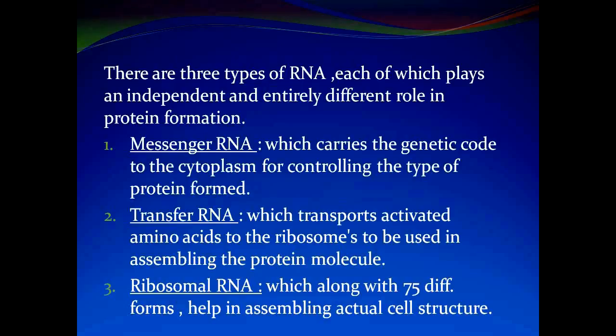Messenger RNA carries the genetic code to the cytoplasm for controlling the types of protein formed. Transfer RNA transports activated amino acids to the ribosomes to be used in assembling the protein molecule. Ribosomal RNA, along with 75 different proteins, helps in assembling the actual cell structure.